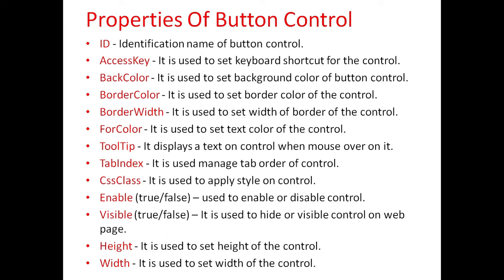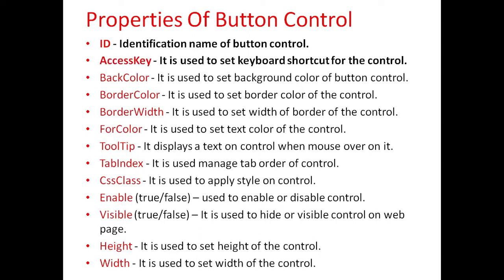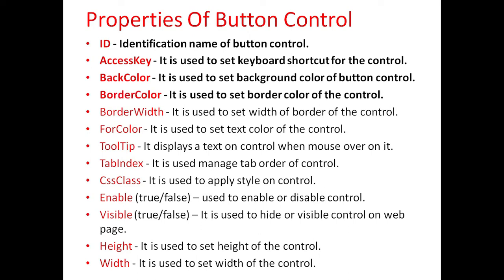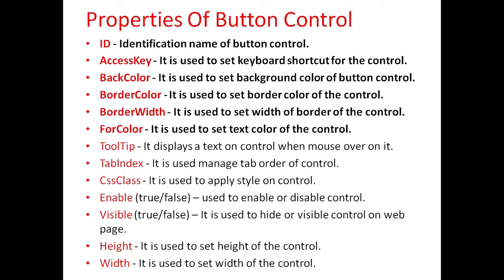Different properties of button controls are: ID, which specifies the identification name of the button control. AccessKey is used to set the keyboard shortcut for the control. BackColor is used to set the background color of the button control. BorderColor is used to set the border color of the control. BorderWidth is used to set the width of the border of the control. ForeColor is used to set the text color of the control.